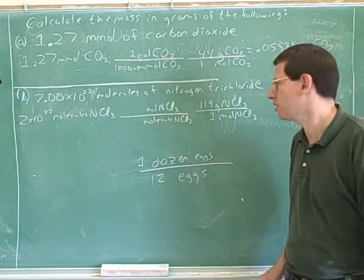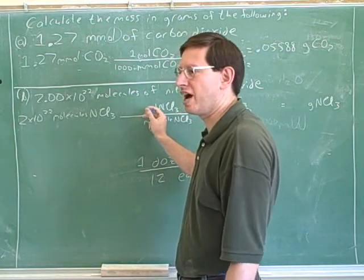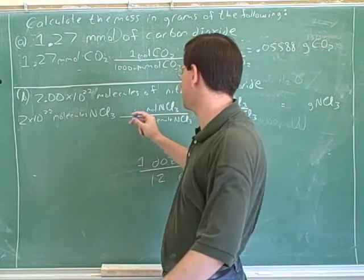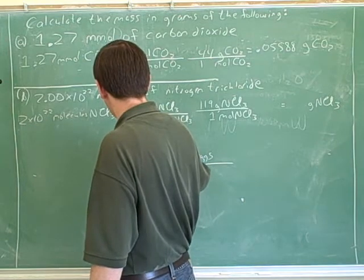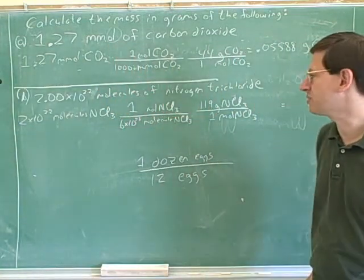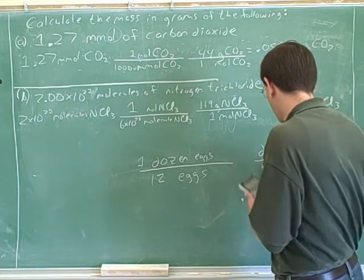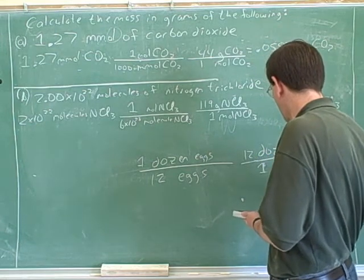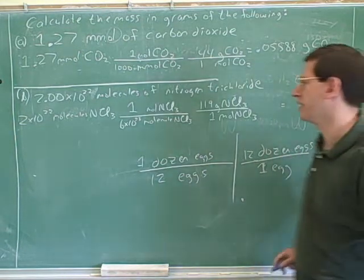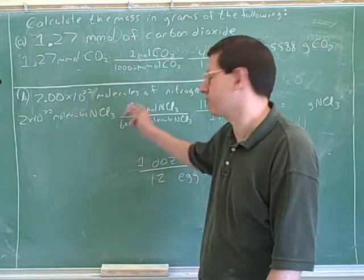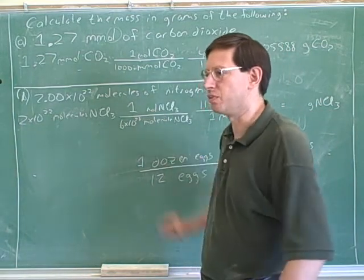Many individuals in the group. Remember that the word dozen is just like the word mole. So I think at first you were putting 6 times 10 to the 23rd on the top. But is it true that one molecule is 6 times 10 to the 23rd groups of molecules? No, that doesn't make sense. What we want to say is that one of these groups is 6 times 10 to the 23rd individual molecules — just like you wouldn't say that one egg is the same as 12 dozen eggs. You should say that there are many individuals in the one big group.